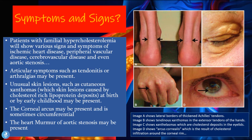Patients with familial hypercholesterolemia will show various signs and symptoms of ischemic heart disease, peripheral vascular disease, cerebral vascular disease, and even aortic stenosis, all due to the blockage of various vessels in the body. These patients may also suffer from articular symptoms such as tendonitis or arthralgias.